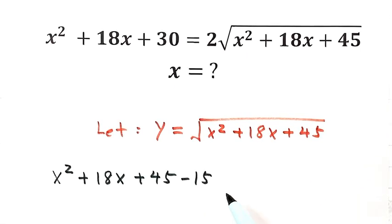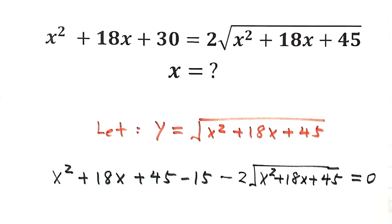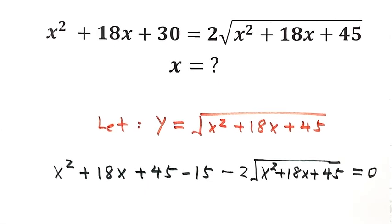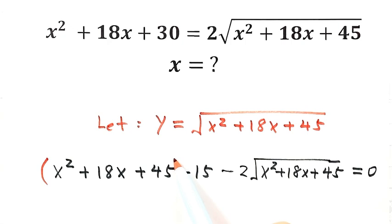Then minus 2 times the square root of x squared plus 18x plus 45 equals 0. So now see, we combine these three together because they are exactly the same as the part under the square root.